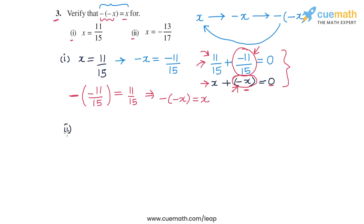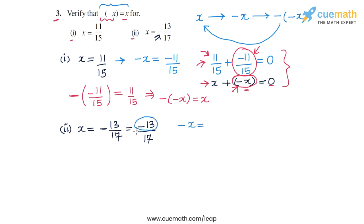In part 2, the rational number is x equal to minus 13 by 17. The minus sign written outside can be taken into the numerator, giving minus 13 by 17. The additive inverse of x will be minus x — flip the sign of the numerator — so minus x equals 13 by 17. The additive inverse of minus 13 by 17 is 13 by 17, and through minus 13 by 17 plus 13 by 17 equals 0, you can see this is true.